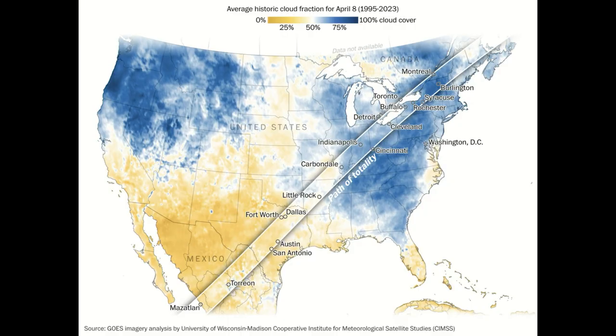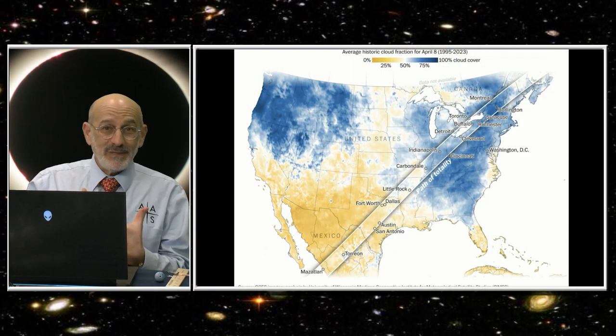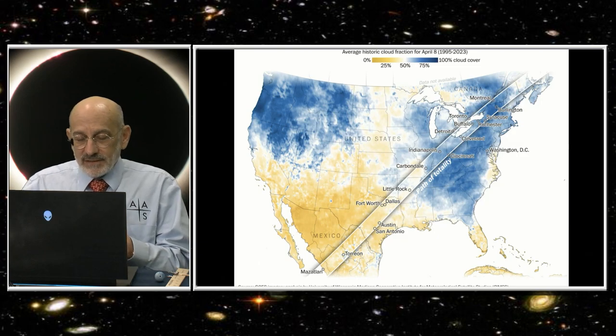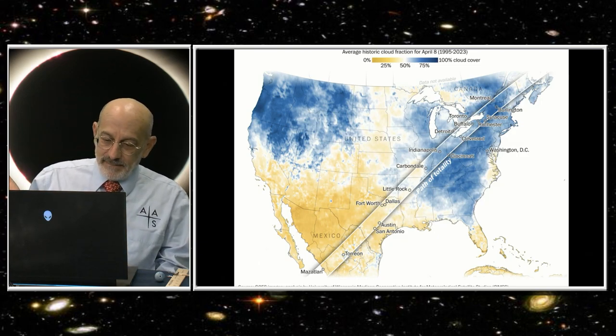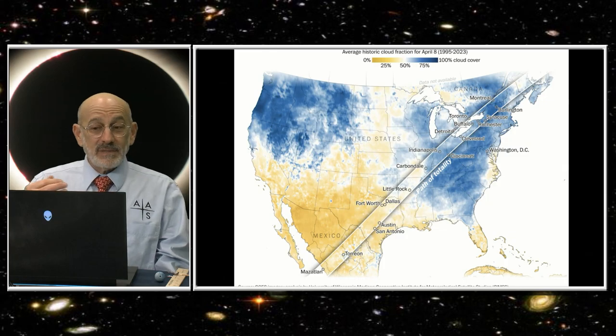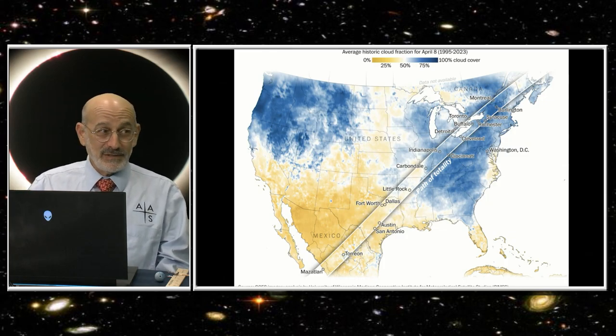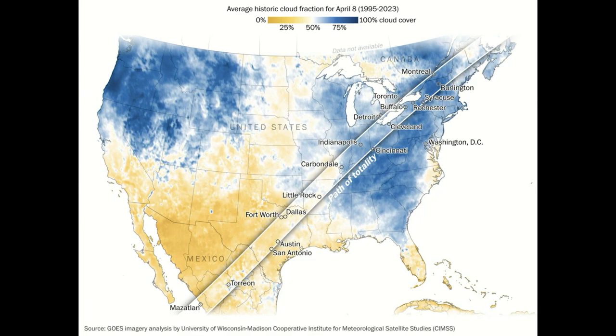Eclipse chasers like to say that climate is what we expect but weather is what we get on eclipse day. This is important because, as you see from this map, some parts of the U.S. are much more likely to have clear skies in early April than other parts. The southwest—the yellow-orange—represents mostly clear skies typically on an early April day.